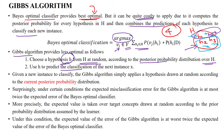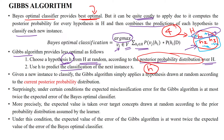In the Gibbs algorithm, instead of selecting all hypotheses as in the Bayes optimal classifier, we select only a single hypothesis based on the posterior probability distribution. This reduces the posterior probability calculation time when classifying test data.